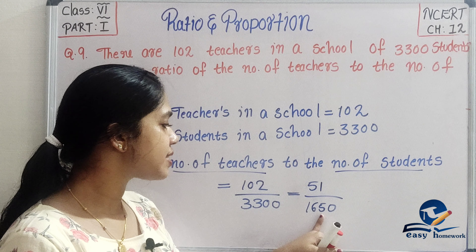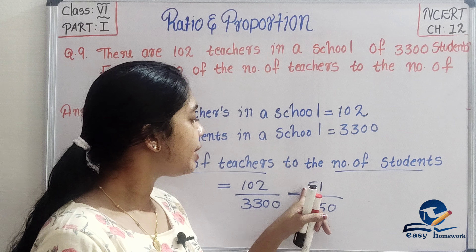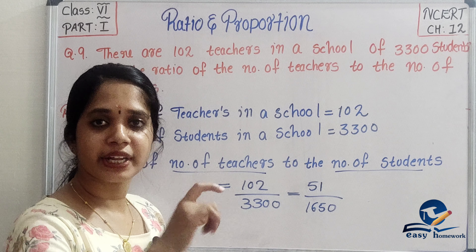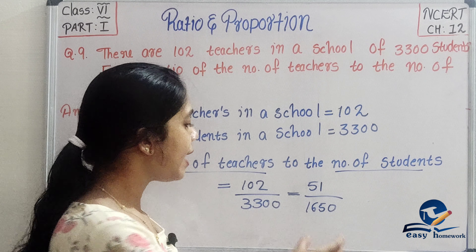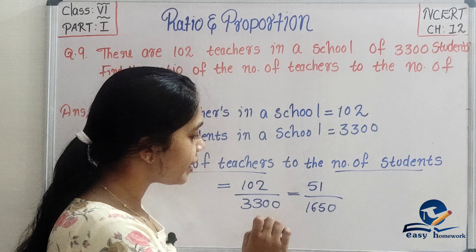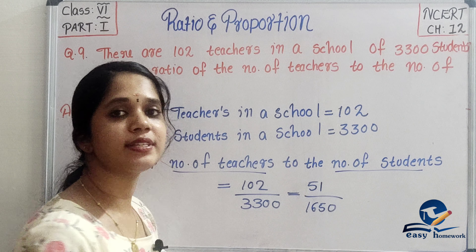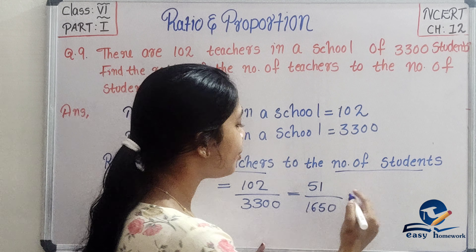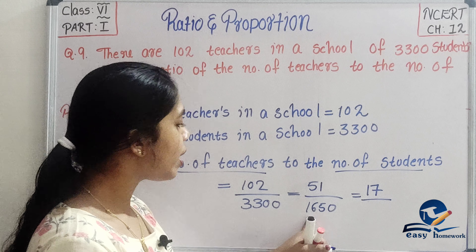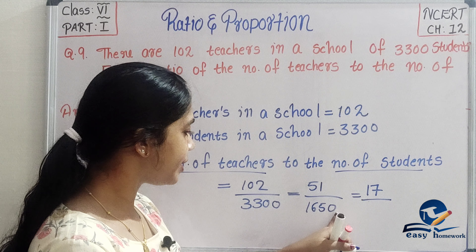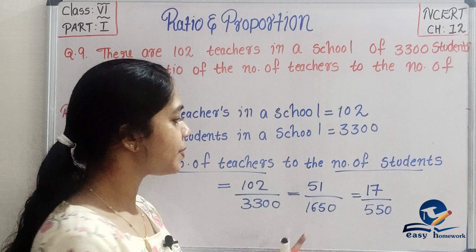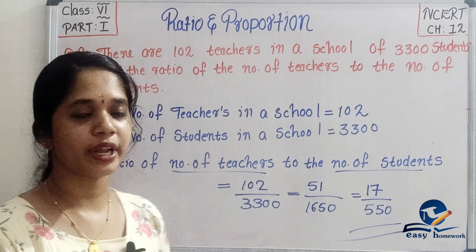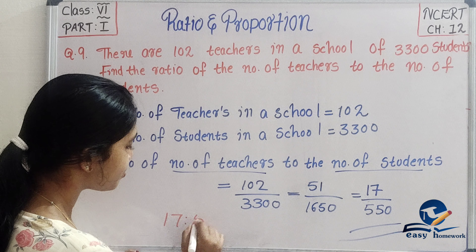We simplify 102 divided by 3,300. We check divisibility: 51 divided by 1,650. Then we divide by 3 — checking the digit sum: 1+6+5 = 12, which is divisible by 3. So we divide to get 17 divided by 550.